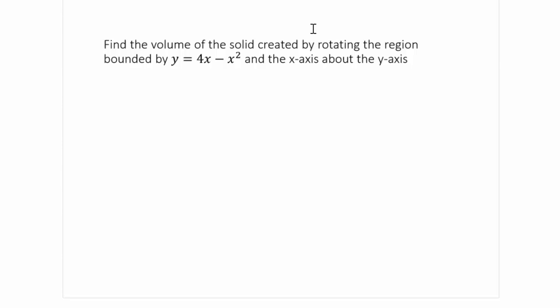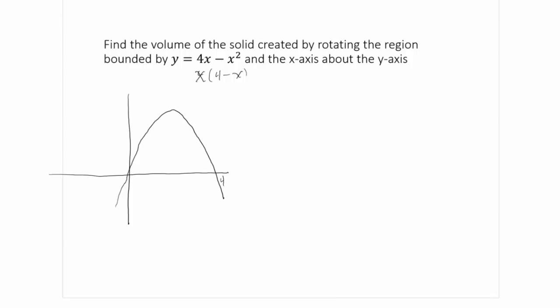For our introductory example, let's find the volume of a solid created by rotating the region bounded by y equals 4x minus x squared and the x-axis about the y-axis. Let's draw it. y equals 4x minus x squared is a parabola opening down. I can factor that as x times (4 minus x), so it has x-intercepts of 0 and 4. The bounded region is between that parabola and the x-axis, and we rotate it about the y-axis.